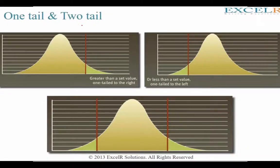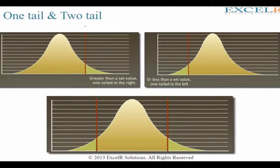We have discussed about one tail and two tail when it came to our Z distribution. If there is a pool of students and you randomly choose a student, what is the probability that the GMAT score would be greater than 740? If this is the kind of question you are solving, you are looking into one tail — the right tail.